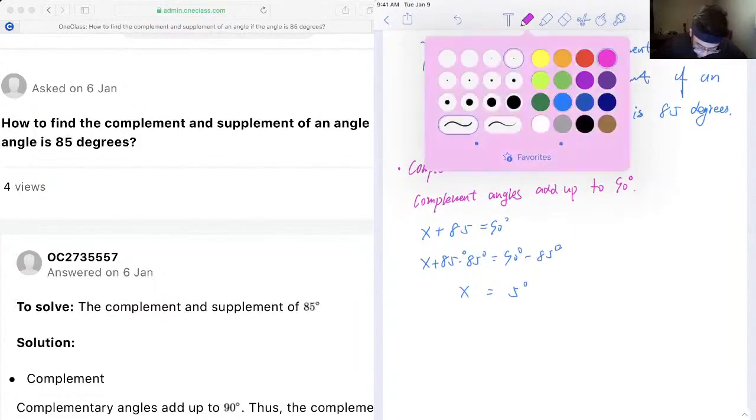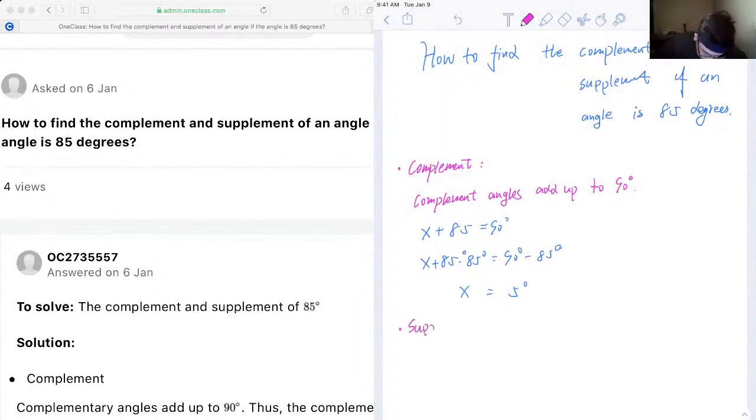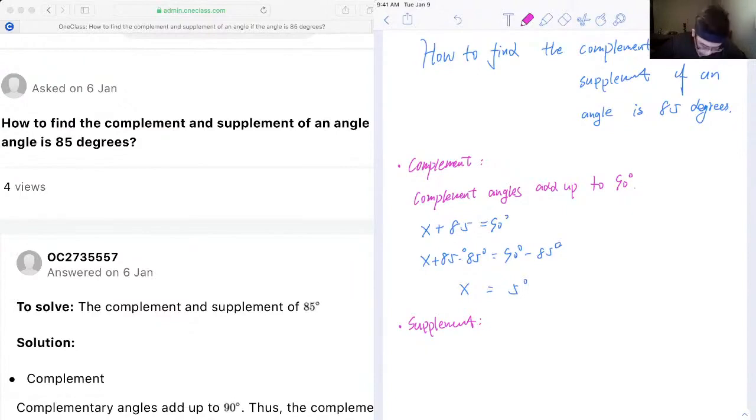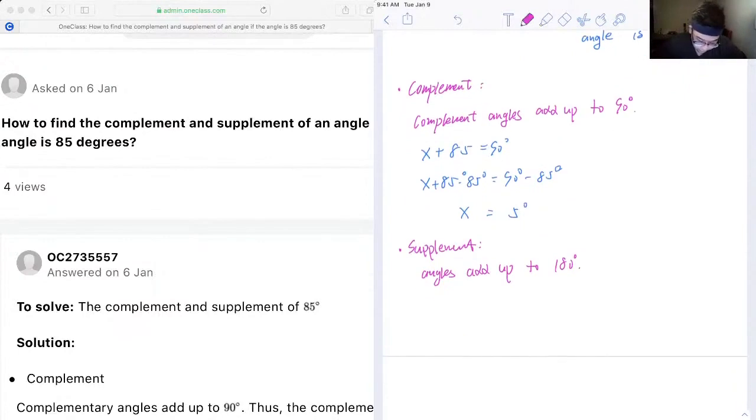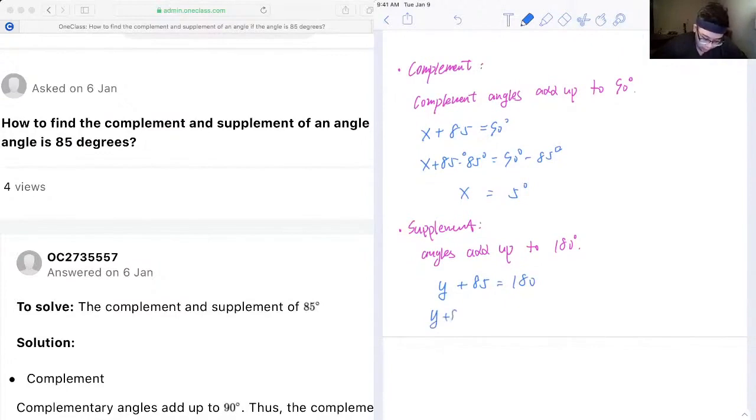And in terms of supplement, that would be the angles add up to 180. And so this is y, so y plus 85 would be equal to 180, and then we minus 85 on both sides. That will give us y equals 95.